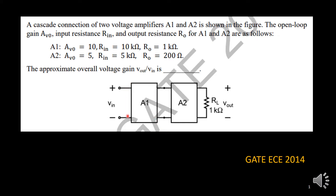We have a two-stage voltage amplifier. This is one stage A1, the second one is A2. They are cascaded one after another, and at the end one load RL is connected.